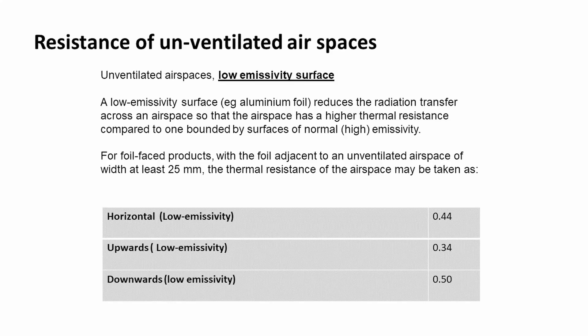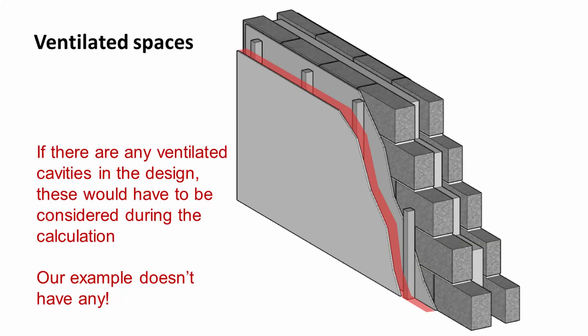We also have to think about unventilated air spaces which have low-E surfaces. The previous table was for normal emissivity, and we get different values depending on whether the surfaces are low-E or not. We also have to consider whether there are any ventilated cavities in our design — cavities that have air passing through them for ventilation or drainage. Our example doesn't have any, so we'll ignore them for now.